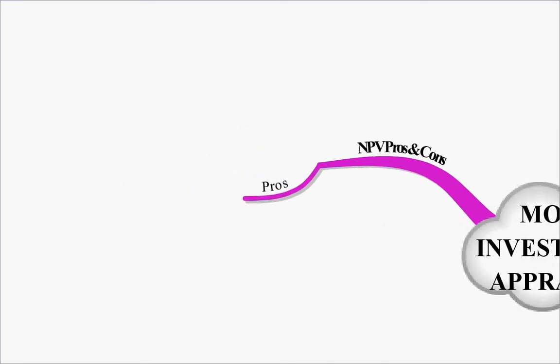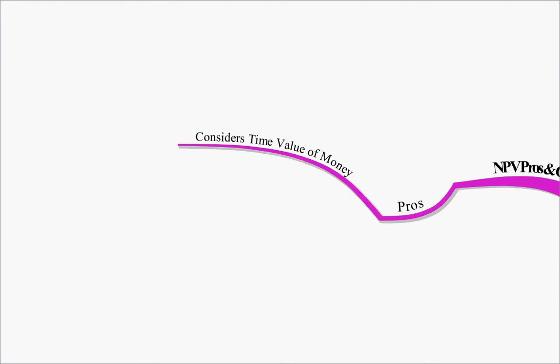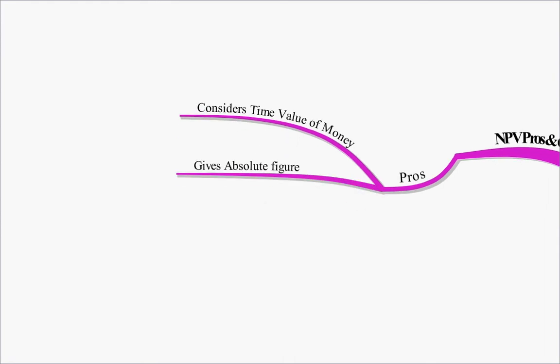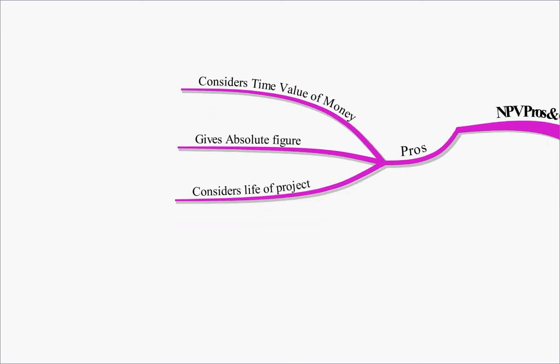Well, first of all, the pros. It considers the time value of money, which is why we use our discount tables. It gives us an absolute figure as opposed to a percentage figure. It considers the whole life of the project.